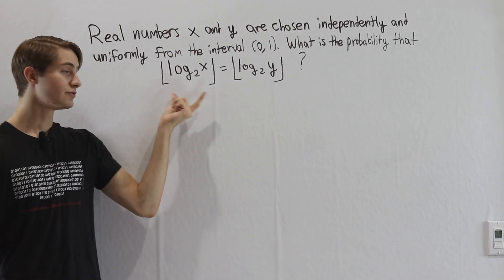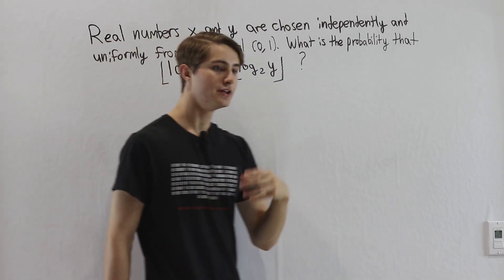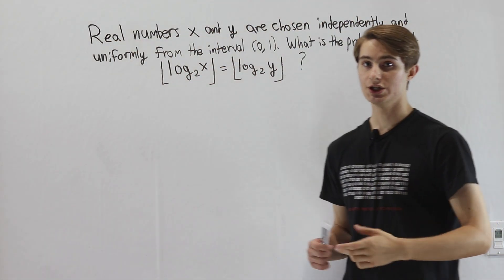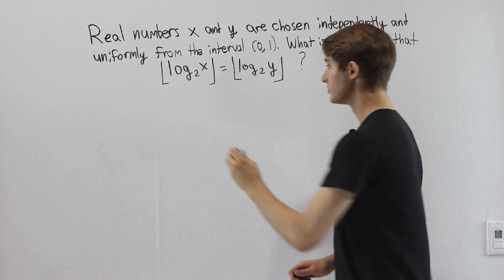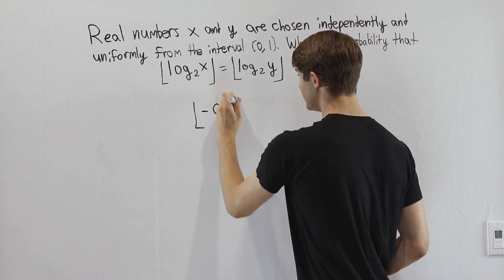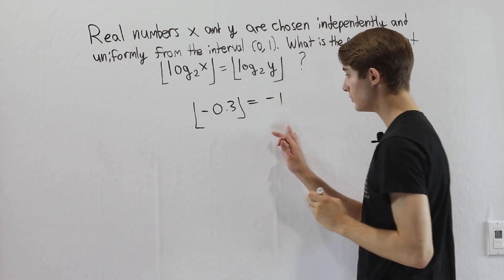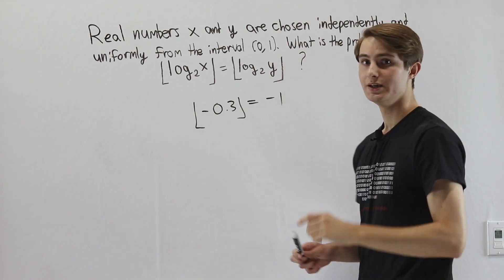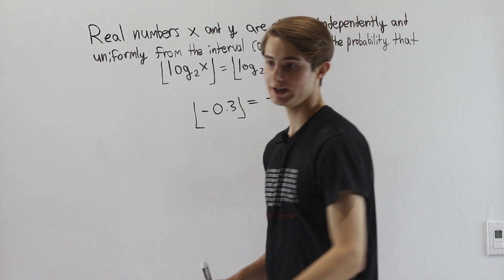In this case, the floor function is talking about the greatest integer less than or equal to the number. For example, the floor of negative 0.3 would equal negative 1, because negative 1 is the next smaller integer.